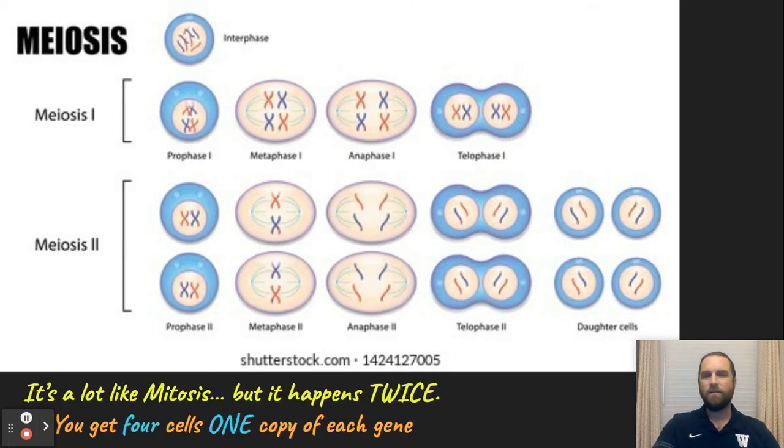Mitosis is a division of a cell to make an identical copy. Meiosis is two divisions to make four total cells.